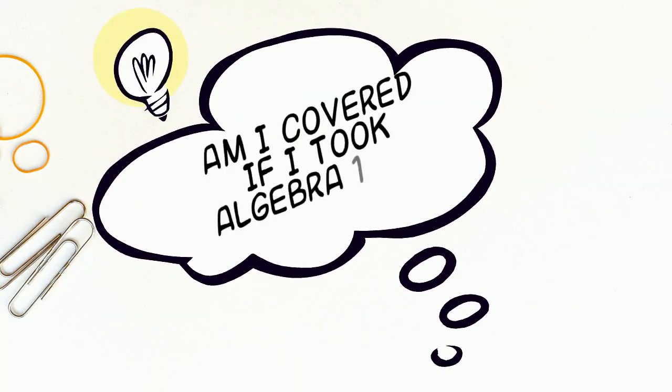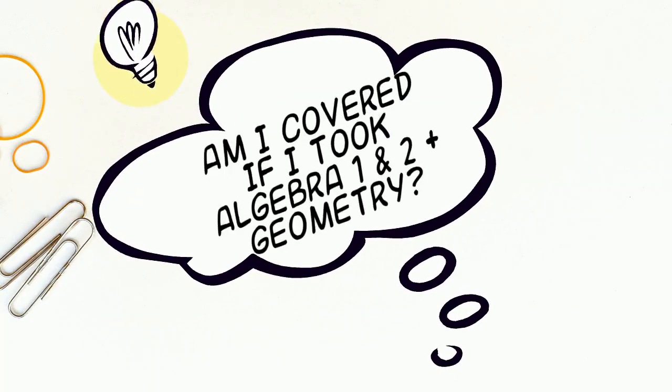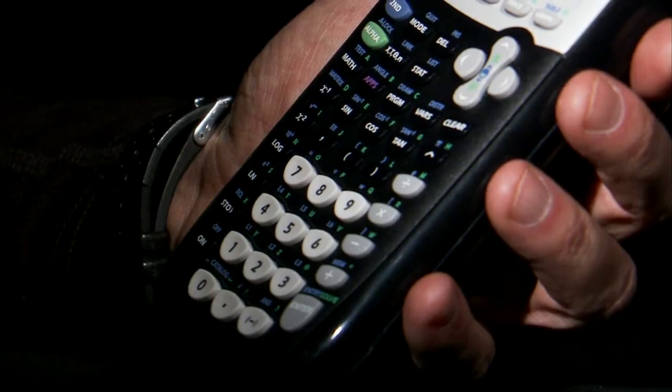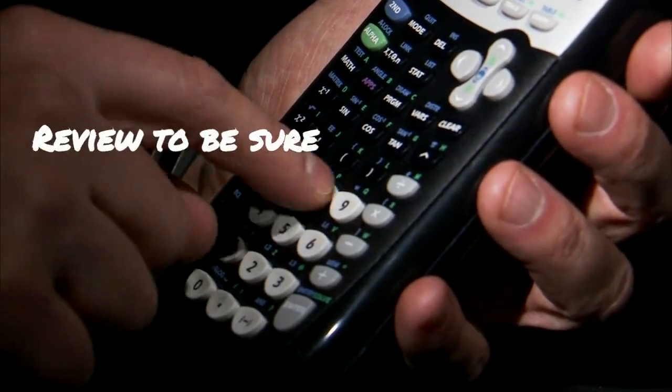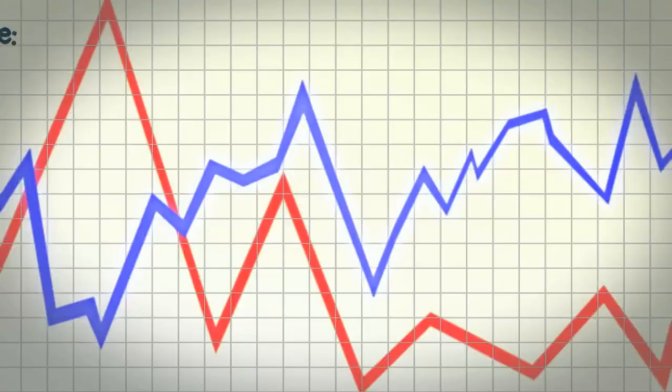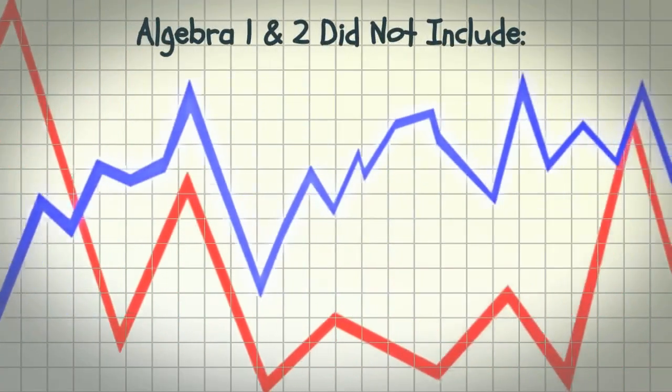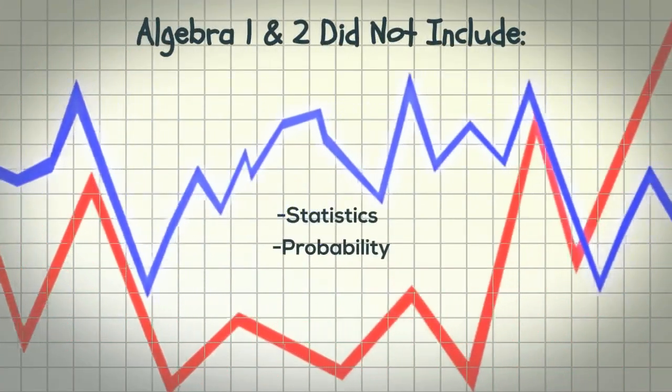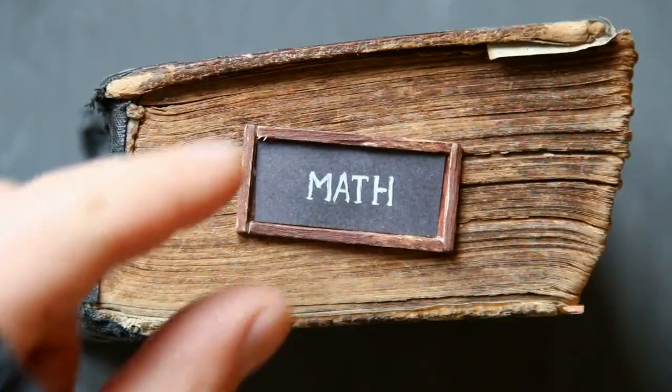Am I covered if I took Algebra 1 and 2 plus Geometry? If you took Algebra 1 and 2 and Geometry in high school, you probably covered everything in the test, but review the list to be sure. Traditional Algebra 1 and 2 did not include statistics or probability, but many states and districts have rolled these topics into those courses.